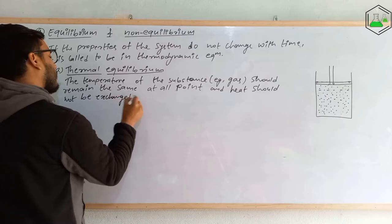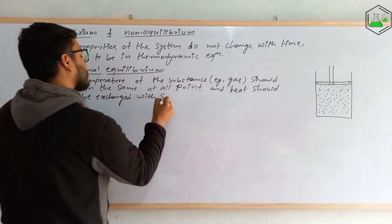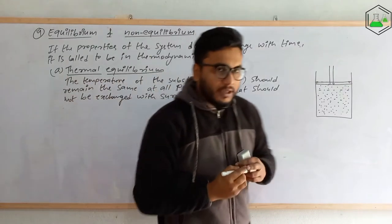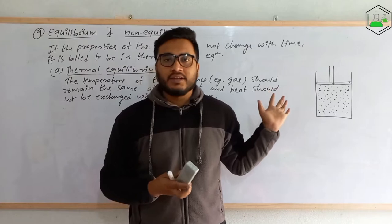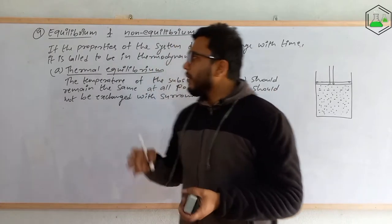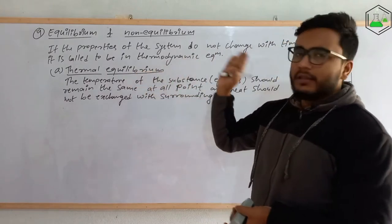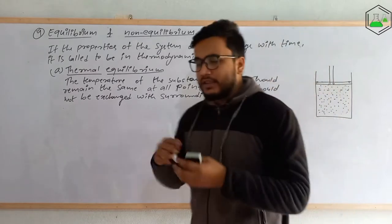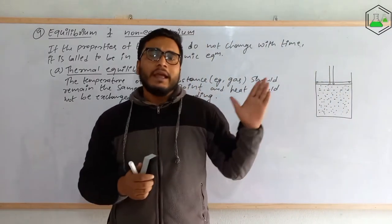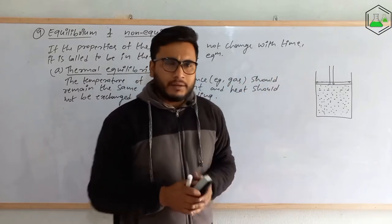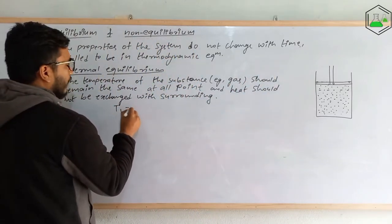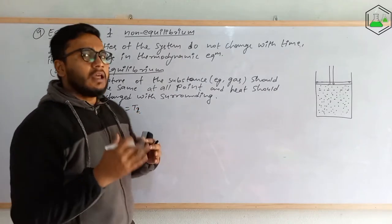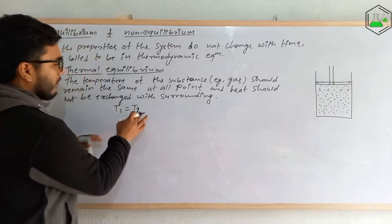If heat is being exchanged with the surrounding, then the temperature inside the system will obviously fluctuate. So thermal equilibrium is the condition in which the system has the same temperature throughout, at all times, and does not exchange heat energy with the surrounding. In this case, T1 — the temperature of the system — will equal T2, the temperature of the surrounding.